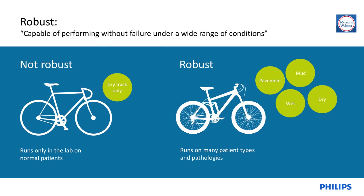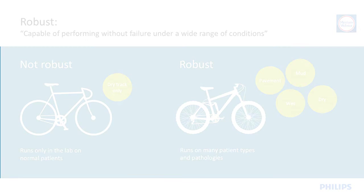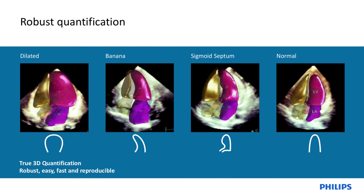We worked very hard to make Heart Model robust — like a mountain bike that works on pavement, mud, dry and wet conditions. Heart Model runs on many types of patients and many types of pathology. Hearts come in different sizes and shapes, and Heart Model actually runs on normal shapes, dilated hearts, hearts with banana shapes, and sigmoid septum. This capability allows it to be used in a wide spectrum of clinical settings.